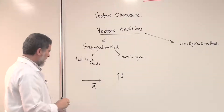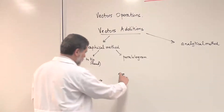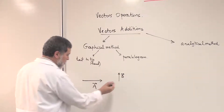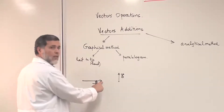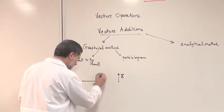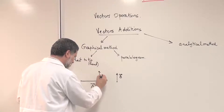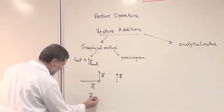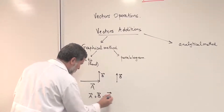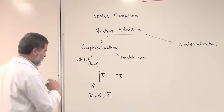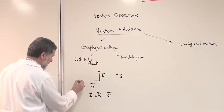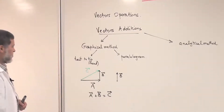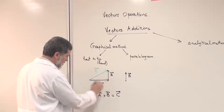The tail-to-head method for adding vectors: I bring vector B, keeping its direction and magnitude the same, so that the tail of B coincides with the head of A. Then to get the resultant, I go from the tail of vector A to the head of vector B and draw the line — this is vector C, which is the addition of vector A and vector B.